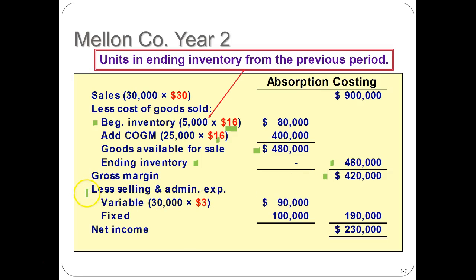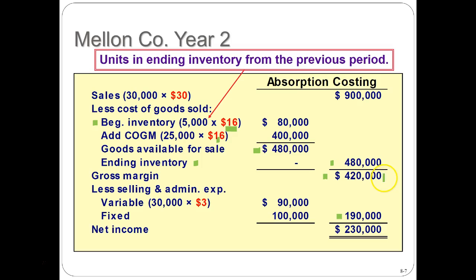Then we subtract selling and administrative expenses, which include the variable portion of 30,000 times $3 giving $90,000, and the fixed portion of $100,000. Those add up to $190,000. Subtracting from gross profit: $420,000 minus $190,000 gives us net income of $230,000 under absorption costing.